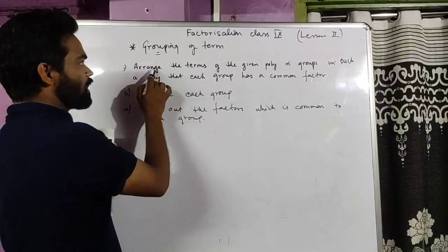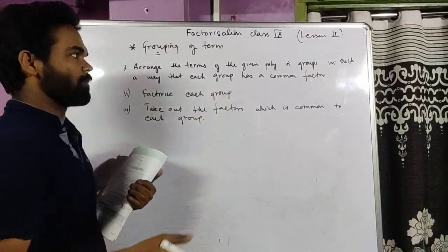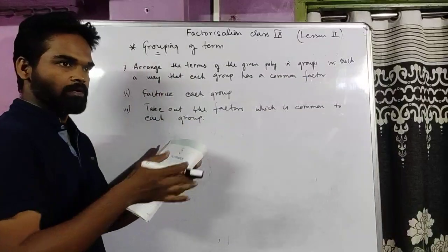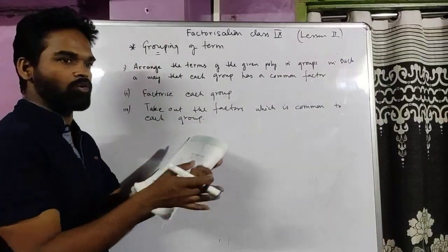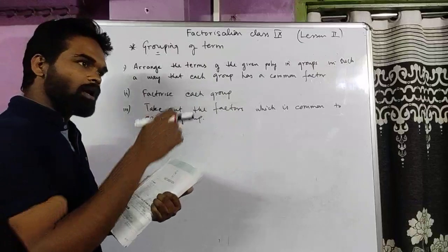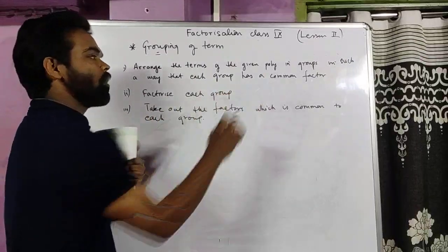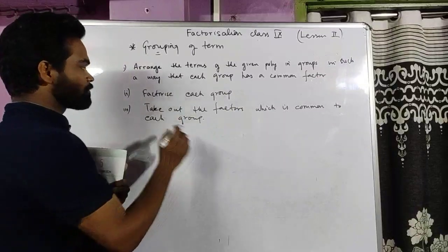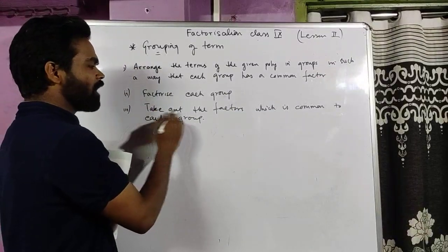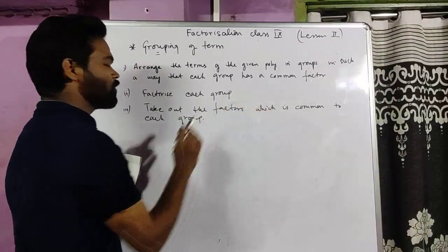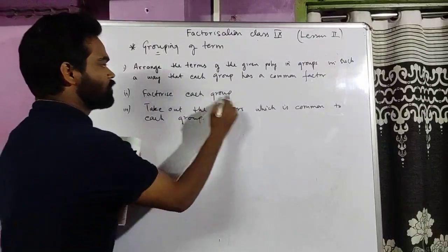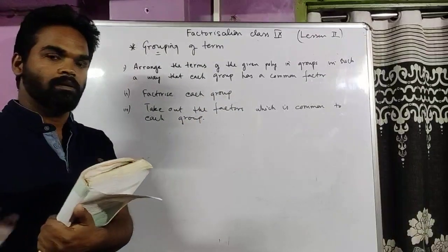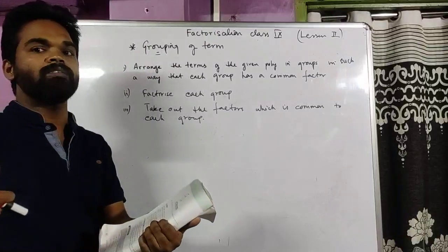What do we mean by grouping of terms? Arrange the terms of the given polynomial in groups such that each group has a common factor. For example, if there are six terms, arrange them in groups of twos so that each group has a common factor. Then factorize each group, and in the third step, take out the factor which is common to each group. Each group which was factorized must have a common factor to get factorized in the last step.